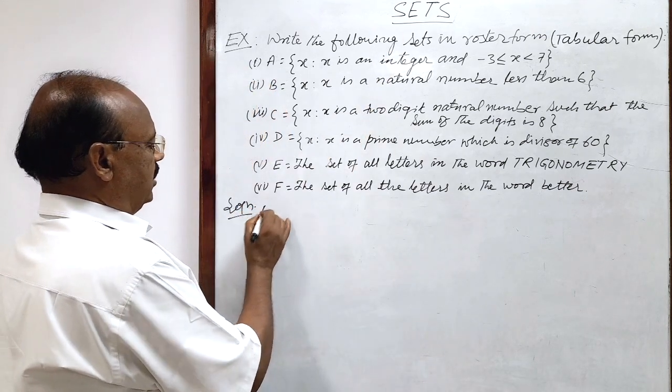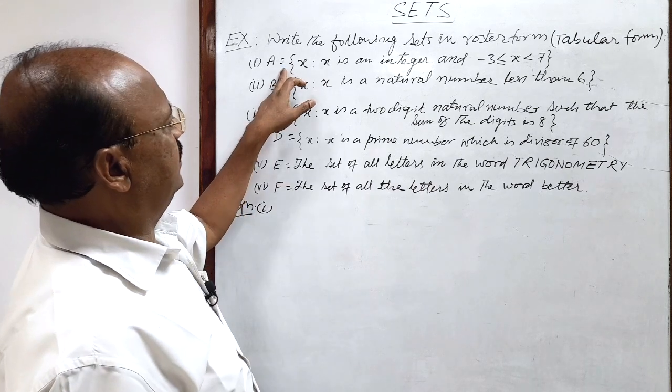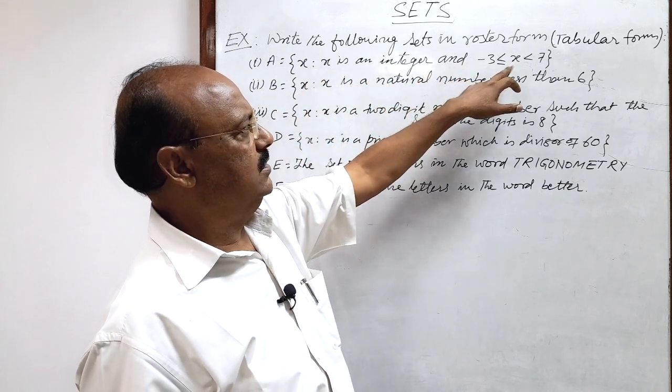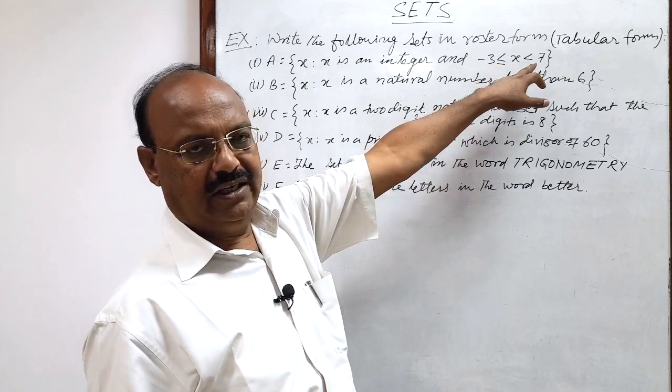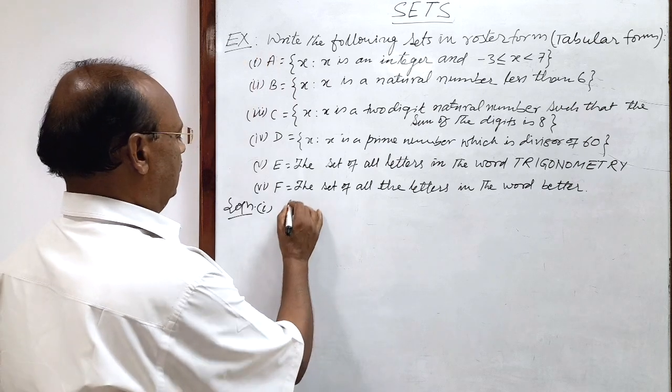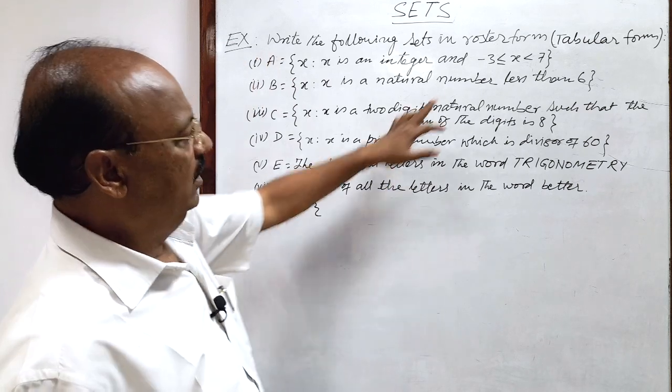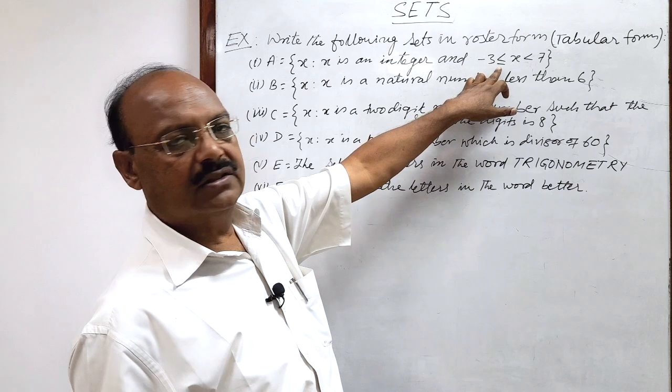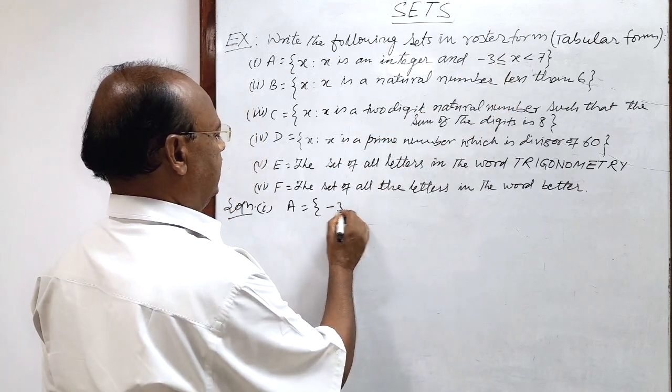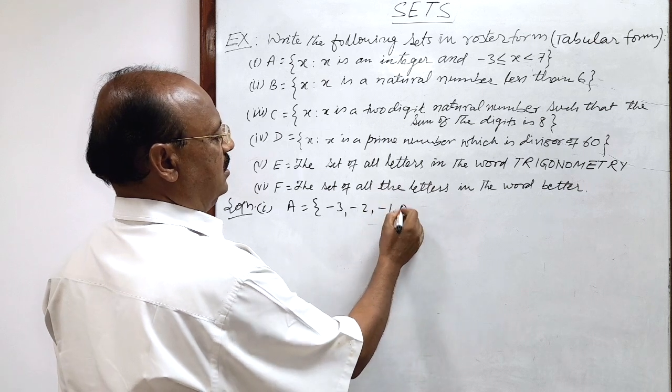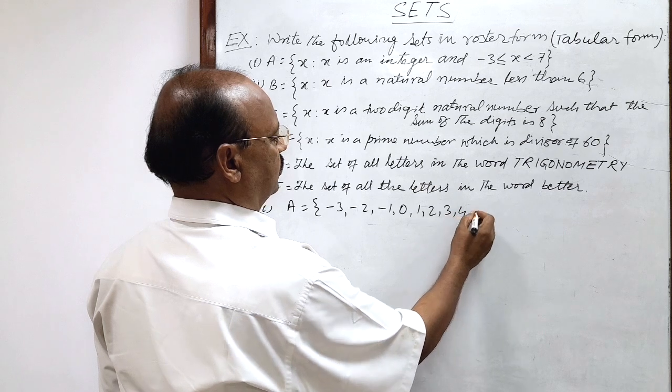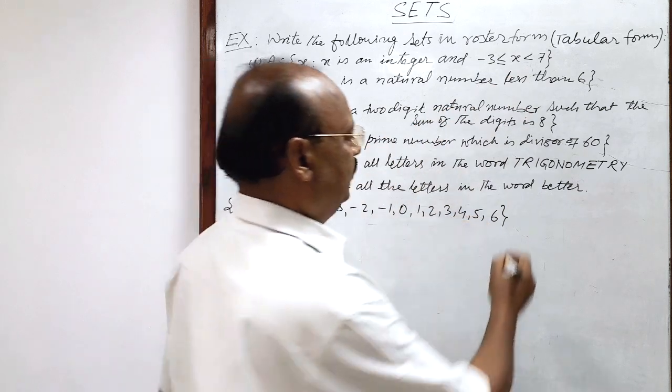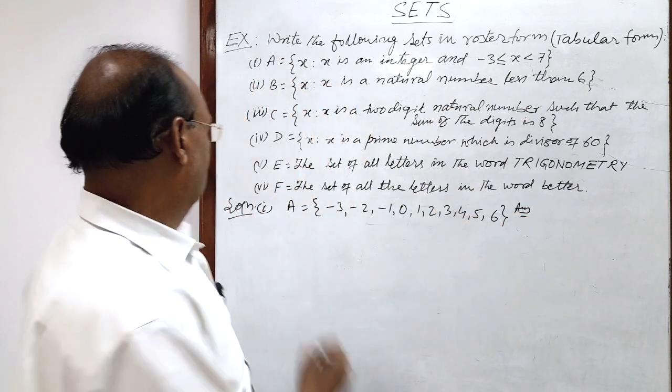So let us start with the first question. Here, A is a set consisting of element x such that x is an integer and x is greater than or equal to -3 and less than 7. So this set A will be elements kept inside a curly bracket. Integers greater than or equal to -3, so we have to start with -3. So this will be -3, -2, -1, 0, 1, 2, 3, 4, 5 and 6 because less than 7. So this is the answer of the first part of the question.